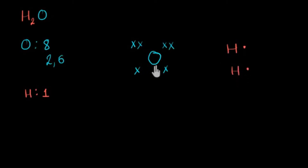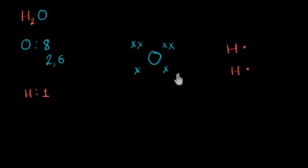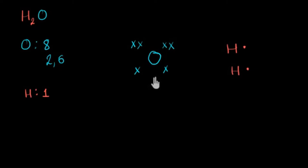Now, they are both going to share electrons and become more stable, forming a covalent bond between them. Every atom wants to become more stable, just like noble gases, which are stable because most of them have eight electrons in their outermost shell. So oxygen will also want to have eight electrons — a complete octet. It currently has only six electrons, which means it needs two more. To get two electrons by sharing, it will have to share two electrons of its own.